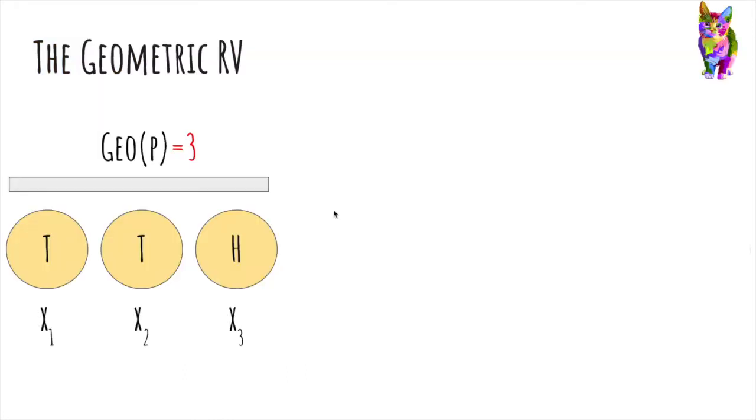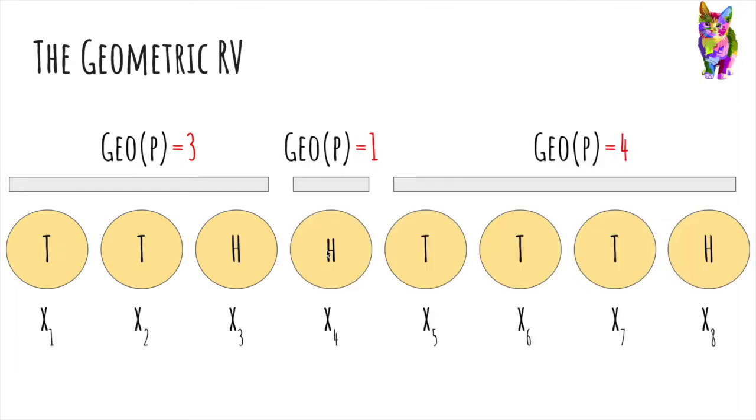Now we'll talk about the geometric random variable, which comes from the Bernoulli process. So we say a random variable is geometric with parameter p if it's the waiting time, the number of flips up to and including our first head. So here it was 3, here it's 1, and here it's 4. So that's the number of flips up to and including our first head.